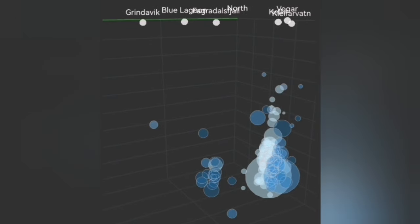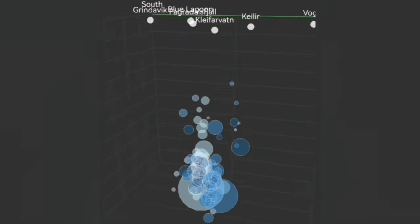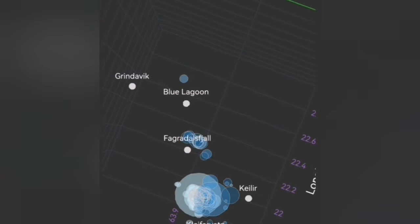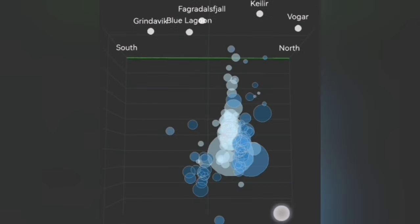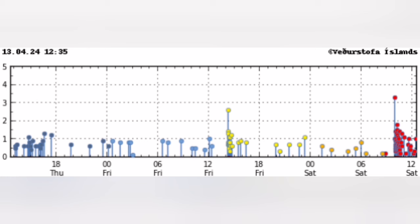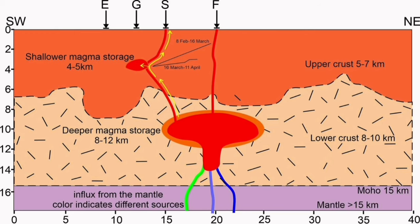I had a video about this which I'll play after this, which shows the source for the Fagradalsfjall volcanic system was at a depth of 12 kilometers. The same may have been true for the Sundhnúkur volcanic system, which is now erupting.